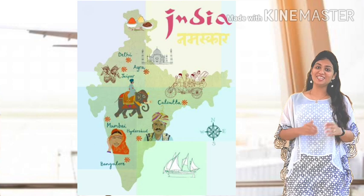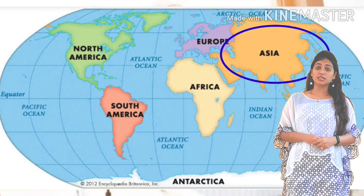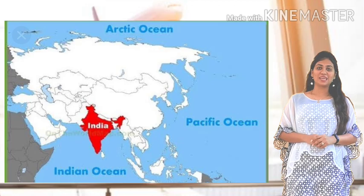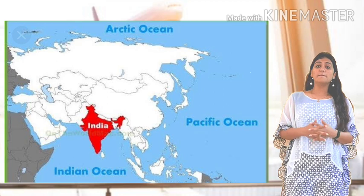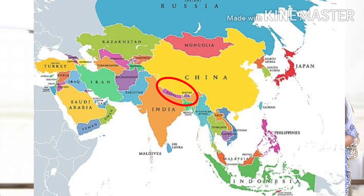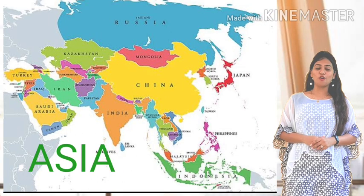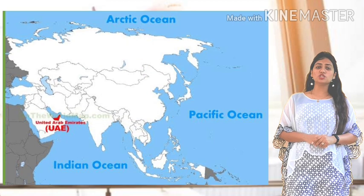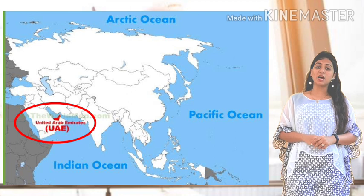We live in India. Our country India is located in the continent of Asia. As you can see in this picture, there are many other countries like China, Nepal, Pakistan and UAE — United Arab Emirates — which are also part of Asia. Today we shall talk about UAE, United Arab Emirates.